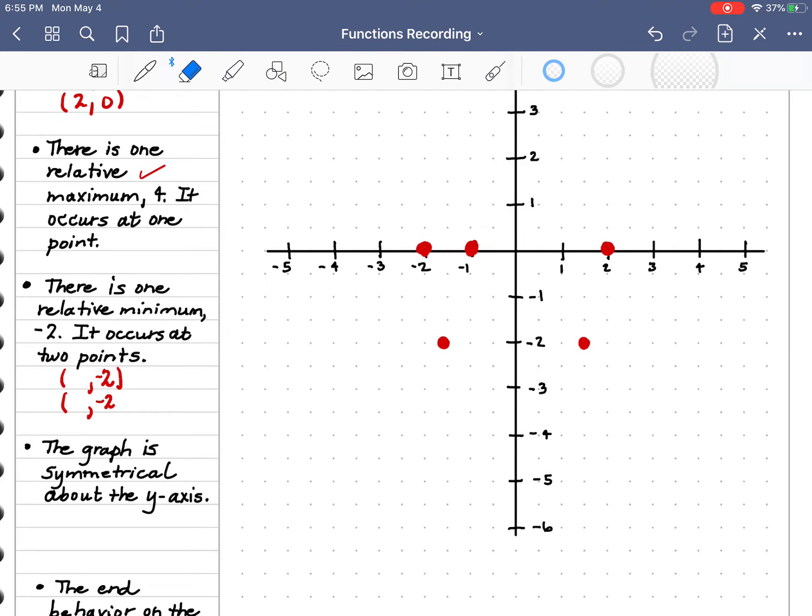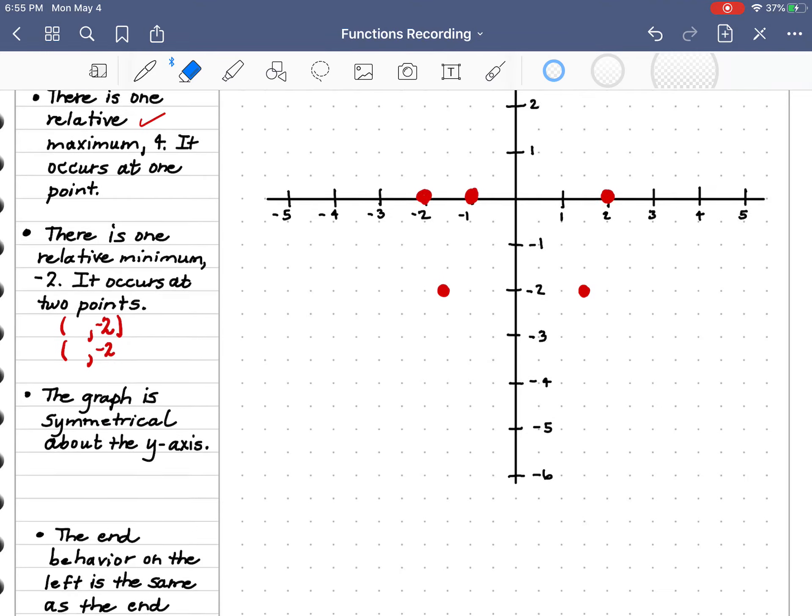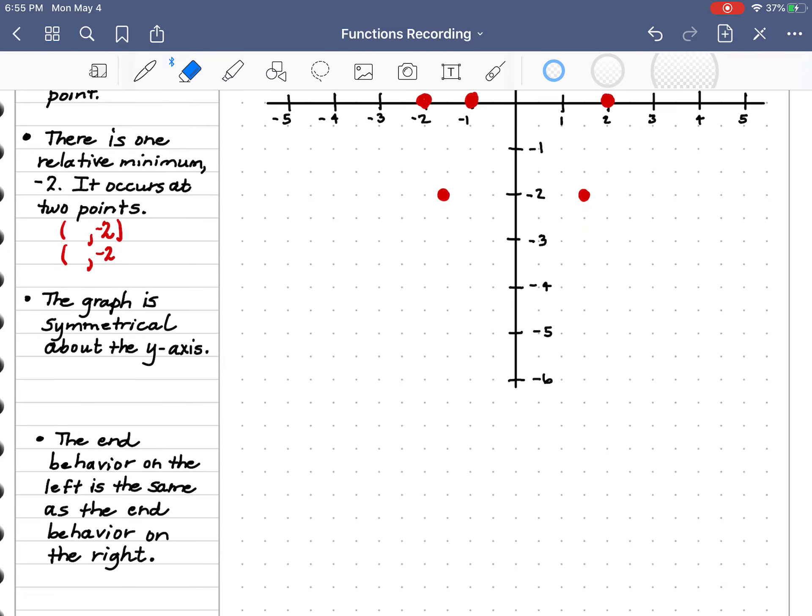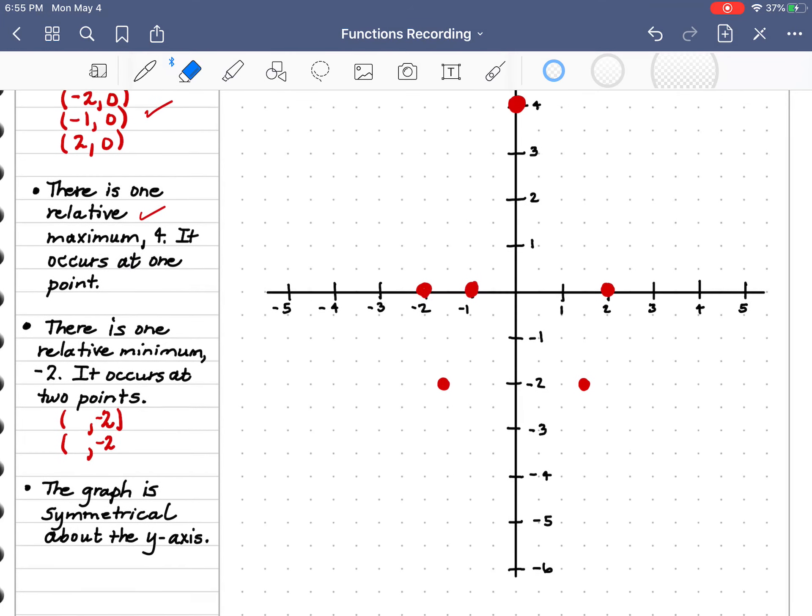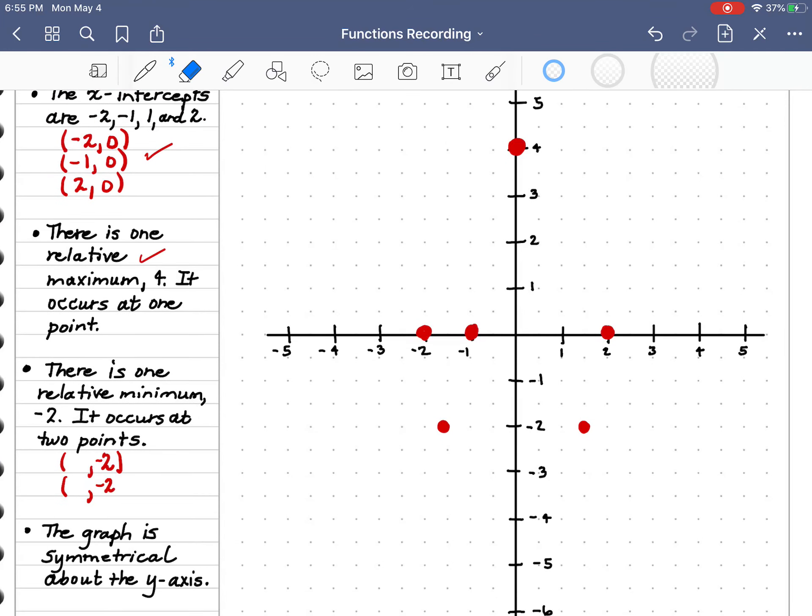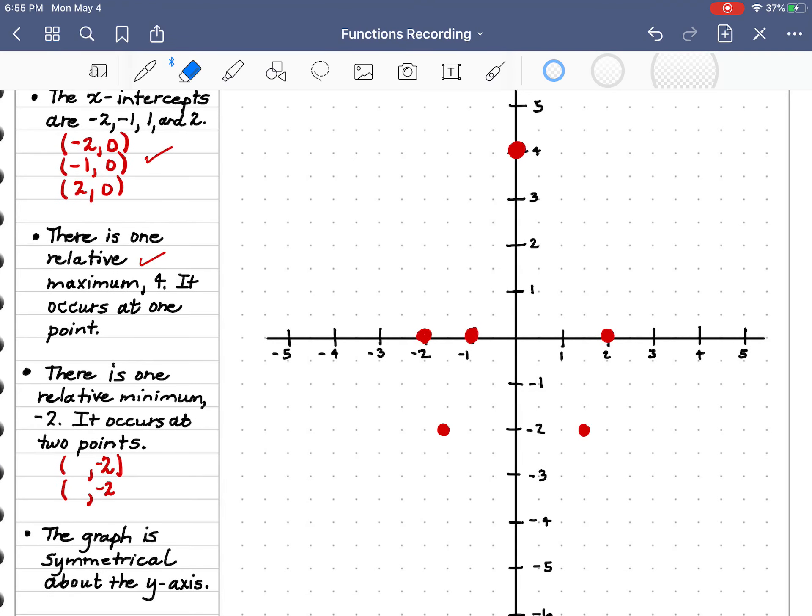That is because this graph is symmetrical about the y-axis. And then the end behavior on the left is the same as the end behavior on the right. Which means that they're both rising or falling. And I'm going to go ahead and show you the picture that they're trying to get us to draw. It is a very strange picture for a graph. Whoops. Try again.